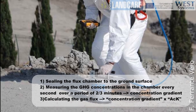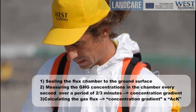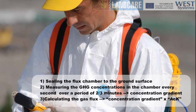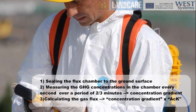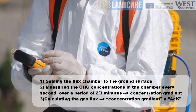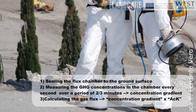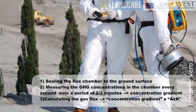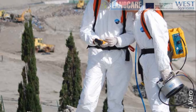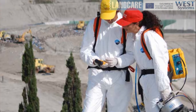Step 3: calculating the gas flux by multiplying the concentration gradient by the accumulation chamber constant — a factor proportional to the internal volume of the chamber divided by the accumulation chamber footprint area. The accumulation chamber method is not affected by environmental parameters such as soil porosity. The obtained measurement is the effective rate of emissions from the examined area.